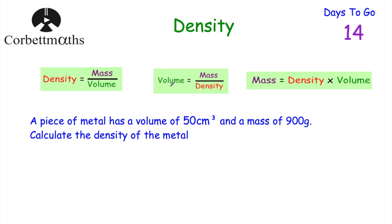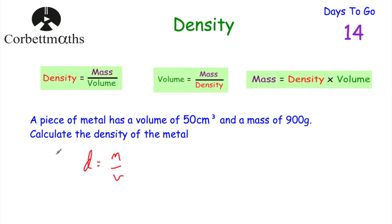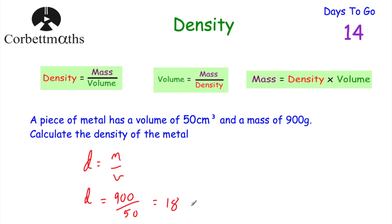Using the formula, density equals mass divided by volume: the density equals 900 divided by 50, which equals 18. So the density of the metal is 18 grams per centimetre cubed — meaning 18 grams for every centimetre cubed.